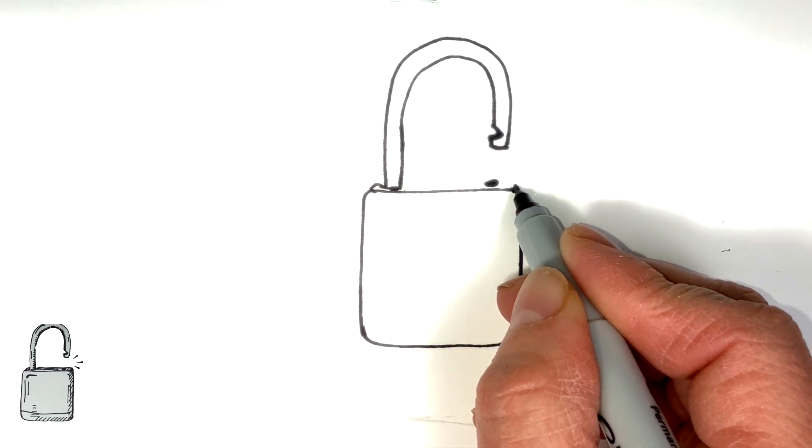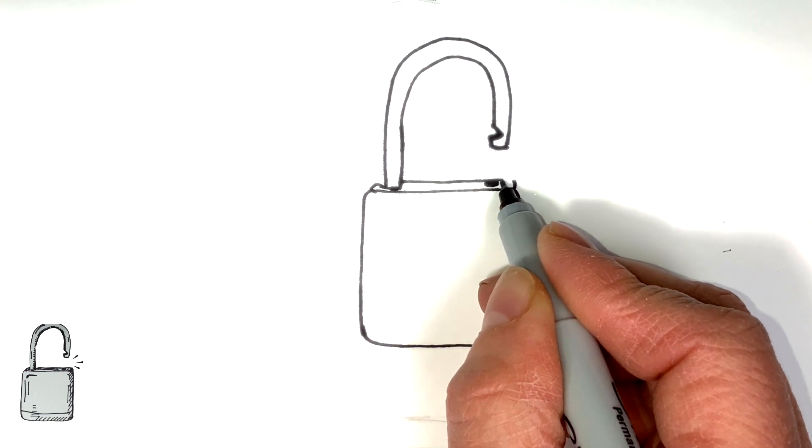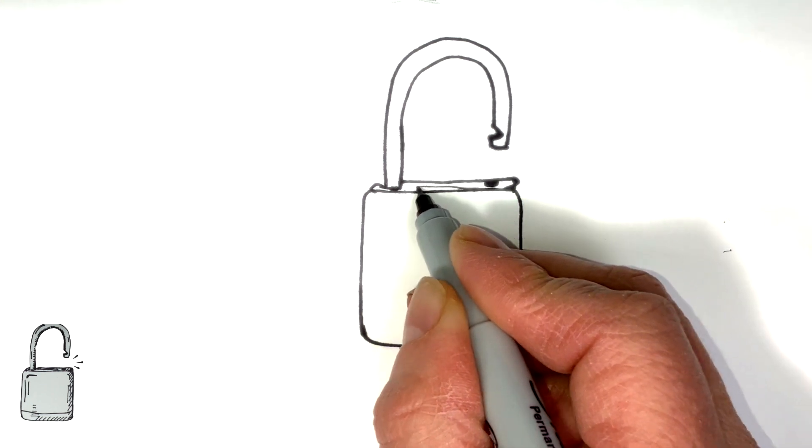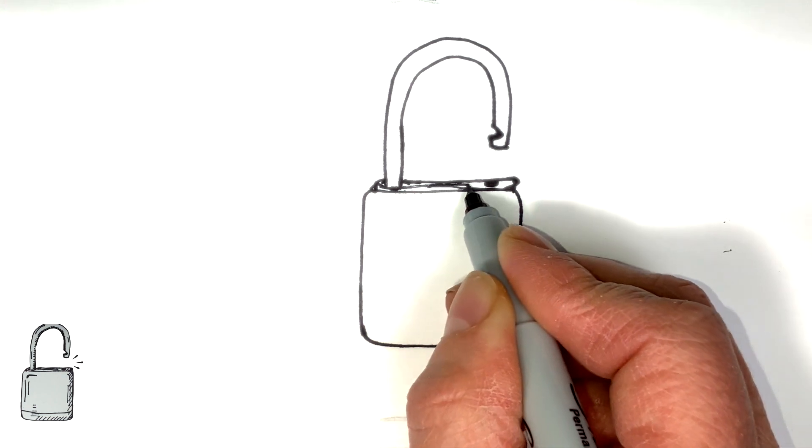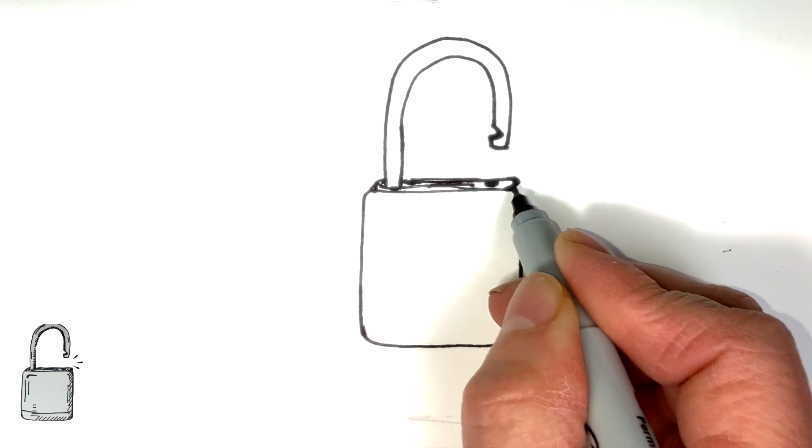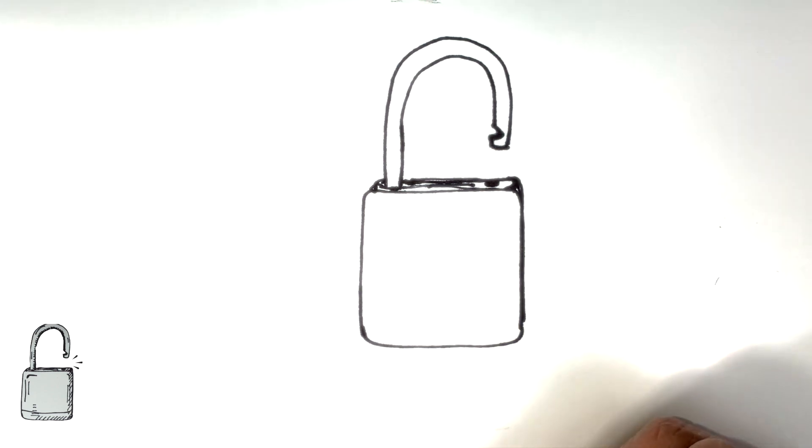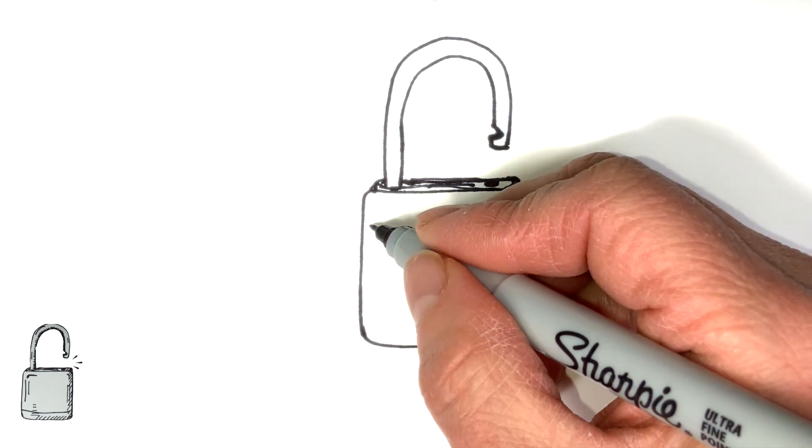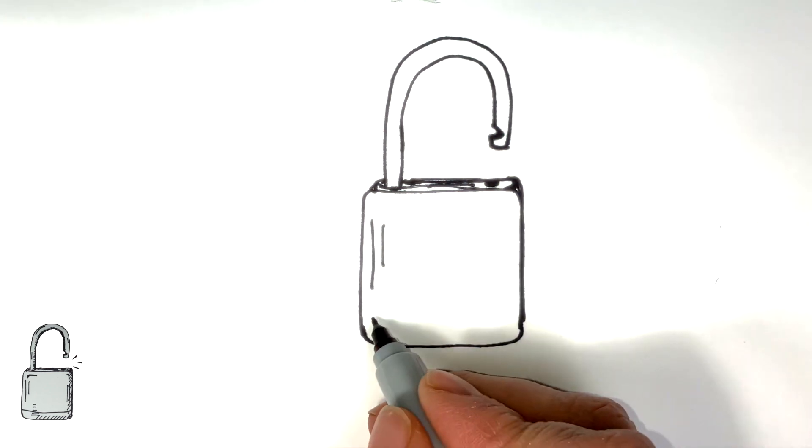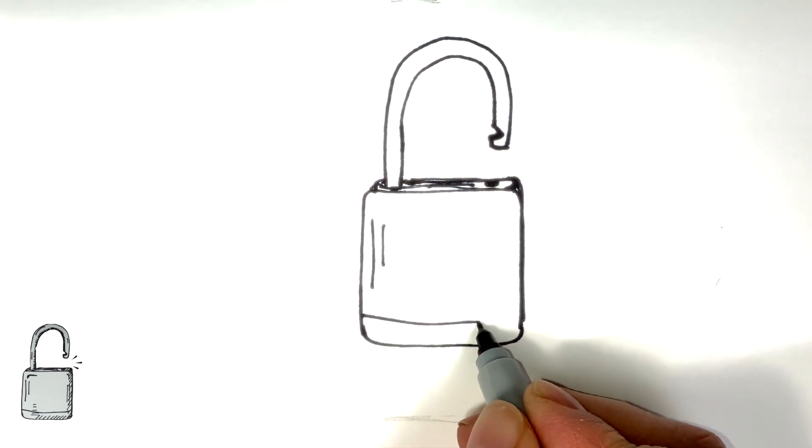But remember we gave it a little sloppy 3D quality, so I'm marking like where the shackle goes into the body of the lock and just putting a little bit of depth with a little bit of shading, but really keeping it loose. It's more about the symbolic message that you have unlocked it with the key.